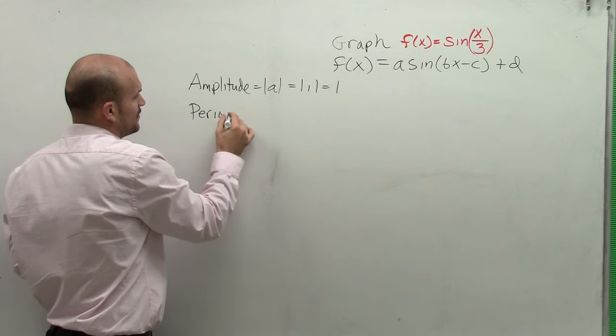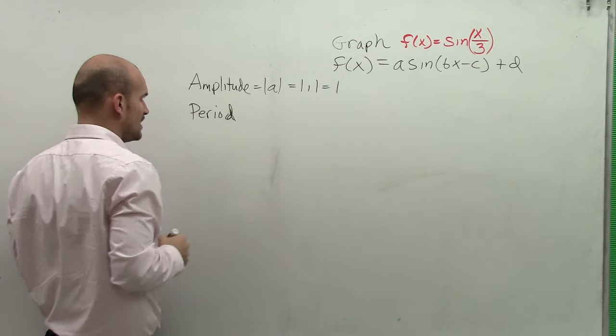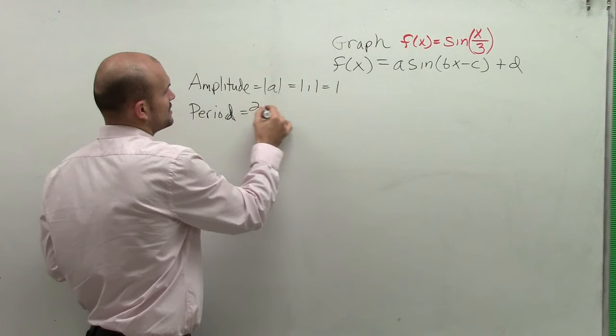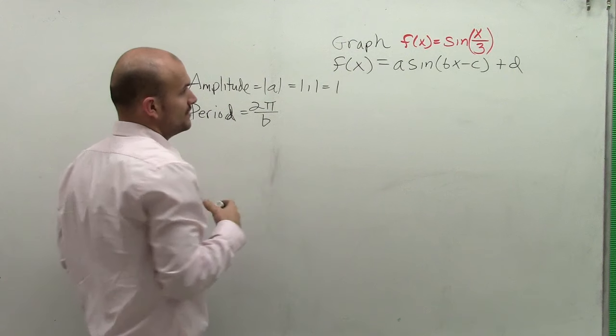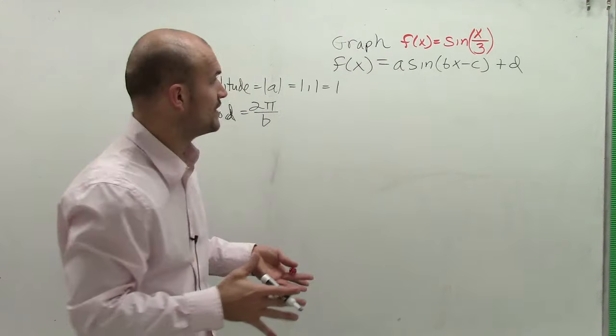So therefore, now I look at my period. And when looking at the period, remember, the period takes 2 pi divided by b. So in this case, remember, b is going to be your coefficient of your variable.